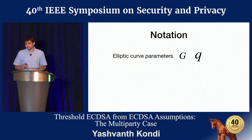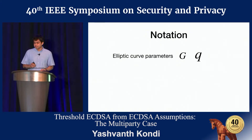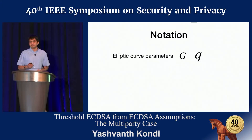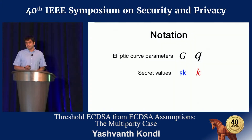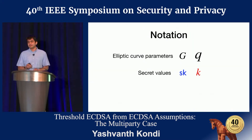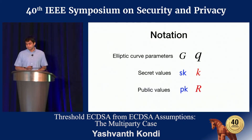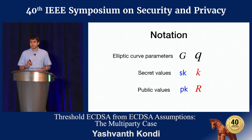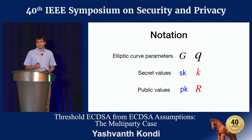A quick look at notation. The elliptic curve is going to be generated by capital G and has order Q. The secret values in the system are the secret key, which lasts for the lifetime of a particular setup, and an instance key K, which is ephemeral. The public values, visible to the rest of the world, are the public key PK and the signing nonce R.